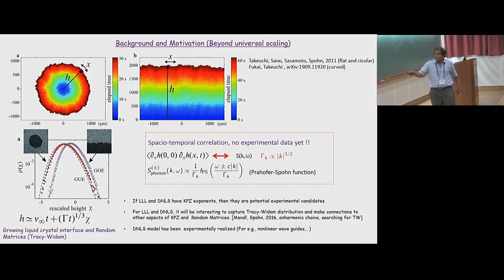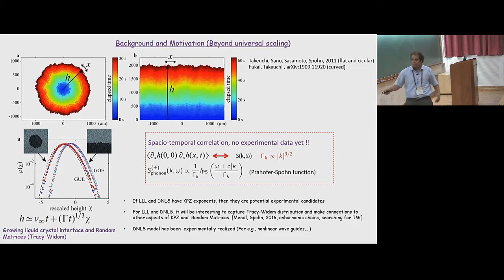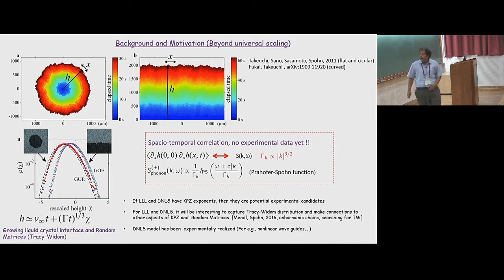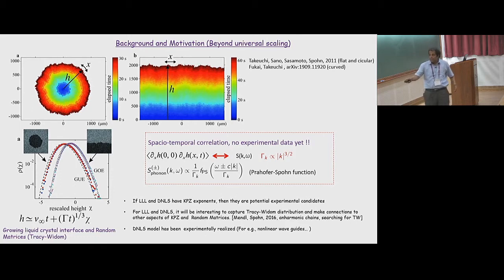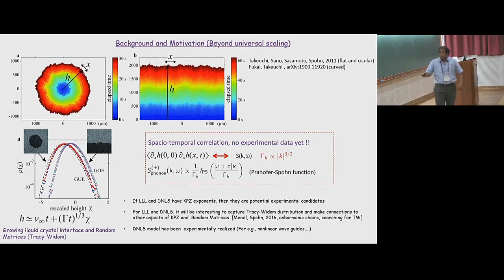The broad motivation is that if the discrete nonlinear Schrödinger equation and XXZ spin chain have KPZ exponents, they are potential experimental candidates. Although there have been experiments on KPZ systems, there is a lot of uncertainty, and the number of experiments which actually see KPZ are not too many. It would be good to have a system like DNLS, which has been realized very well experimentally, as a potential candidate for KPZ physics.